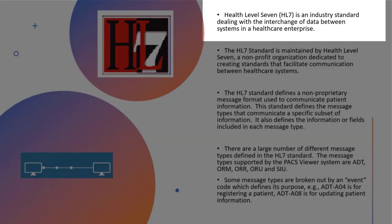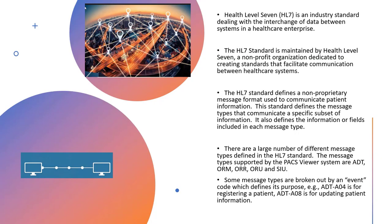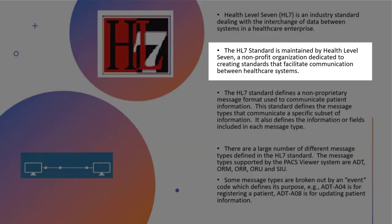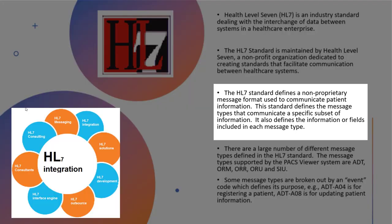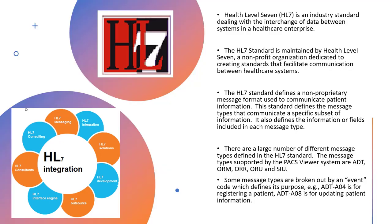Health Level 7 is an industry standard dealing with the interchange of data between systems in a healthcare enterprise. The HL7 standard is maintained by Health Level 7, a non-profit organization dedicated to creating standards that facilitate communication between healthcare. The HL7 standard defines a non-proprietary message format used to communicate patient information. This standard defines the message types that communicate a specific subset of information, and also defines the fields included in each type of message.